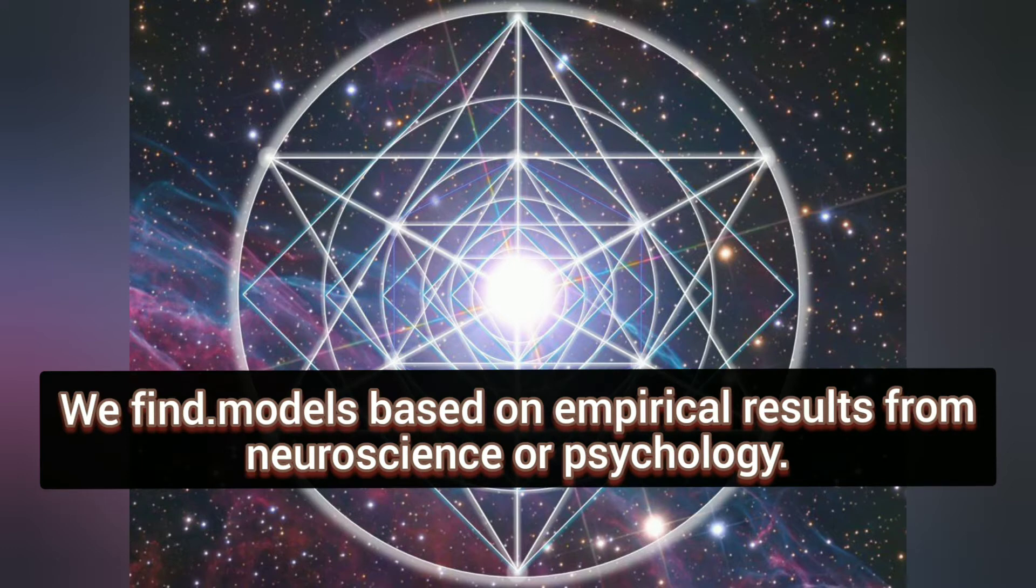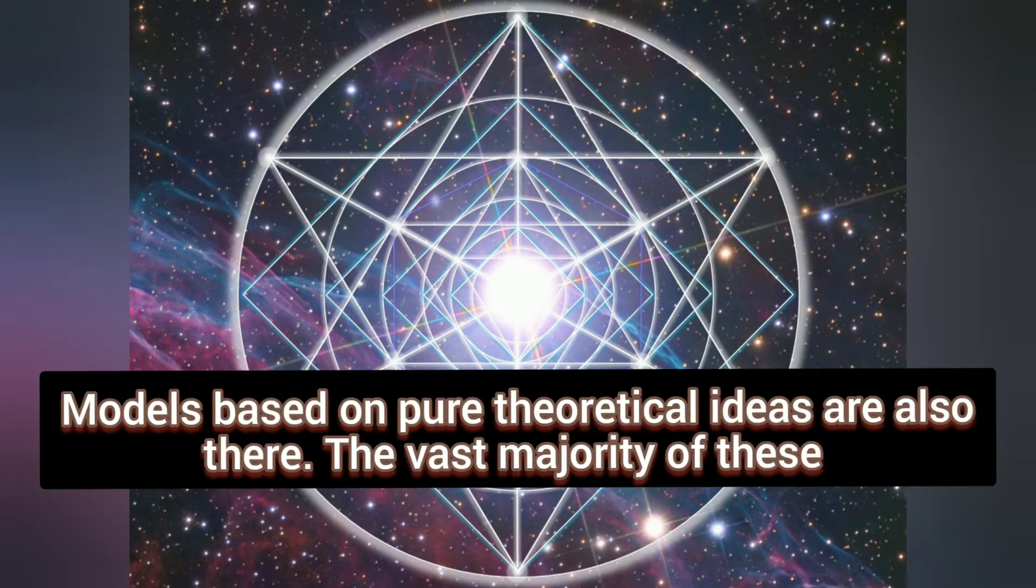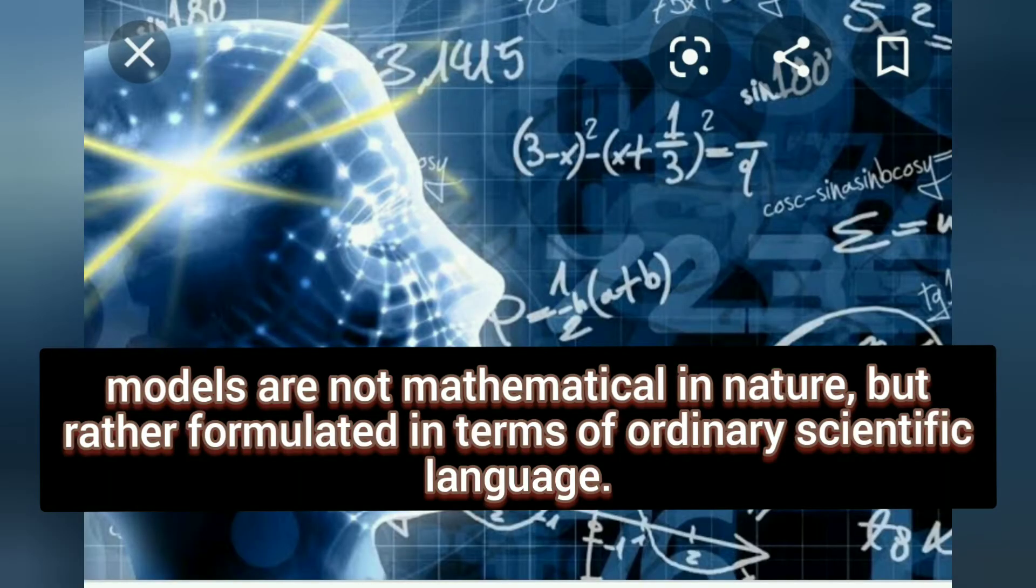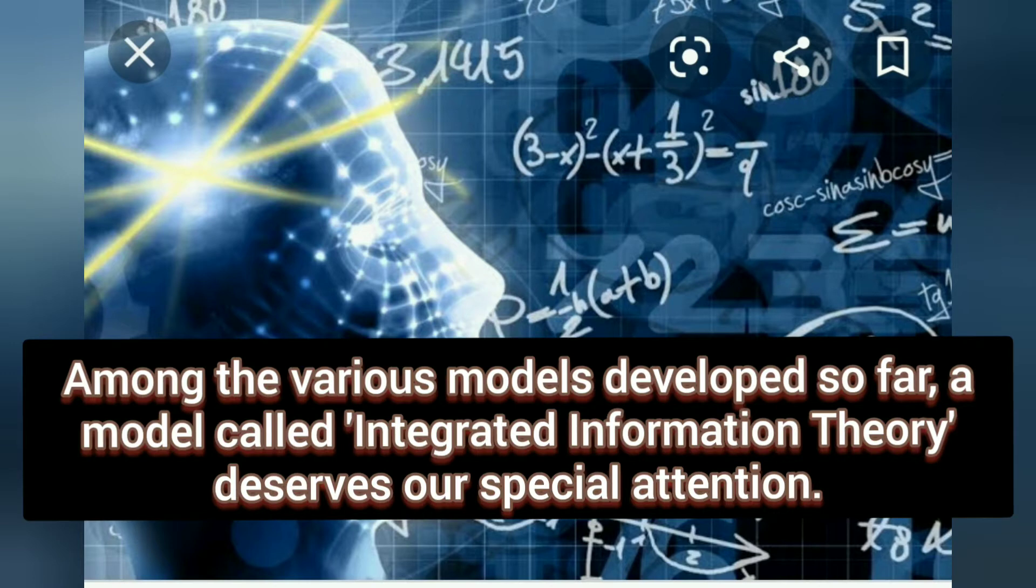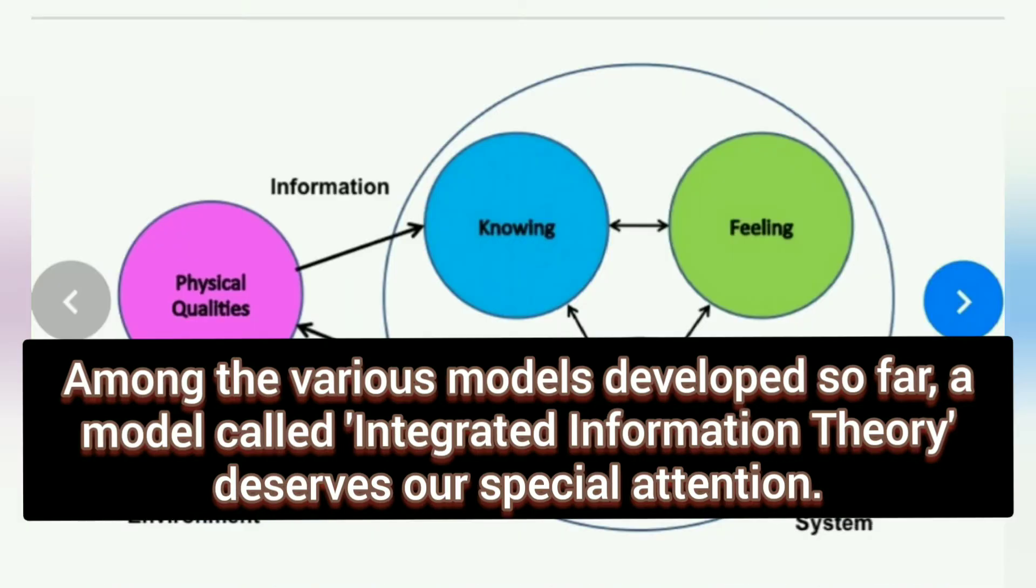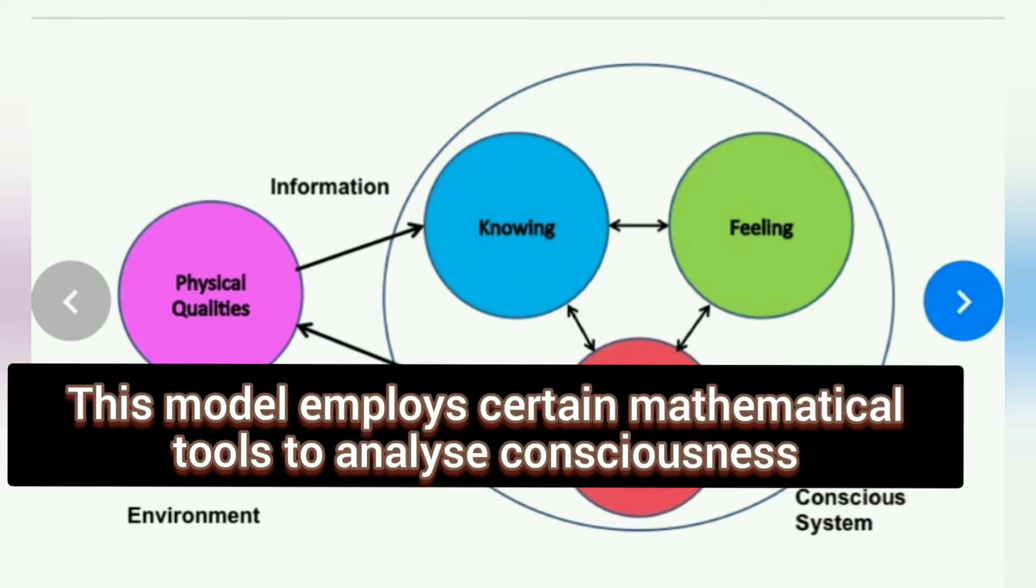Literature surveys show several types of models to explain consciousness. We find models based on empirical results from neuroscience or psychology. Models based on pure theoretical ideas are also there. The vast majority of these models are not mathematical in nature but rather formulated in terms of ordinary scientific language. Among the various models developed so far, a model called integrated information theory deserves our special attention. This model employs certain mathematical tools to analyze consciousness.